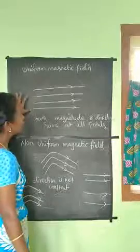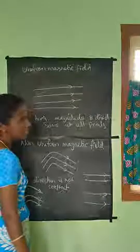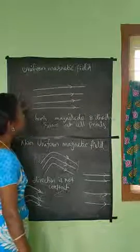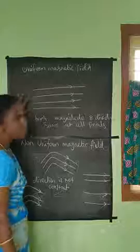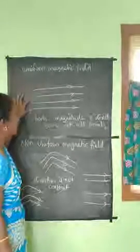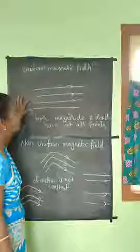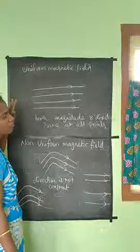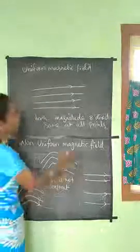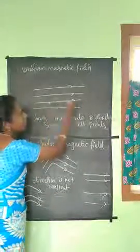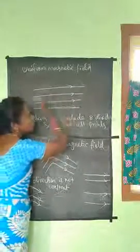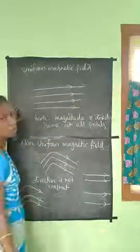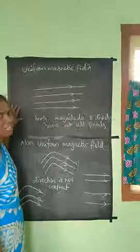When the magnetic field lines are equally spaced, that means the magnitude of the magnetic field is the same at all points. The direction of the magnetic field is also in one direction. So it represents a uniform magnetic field.